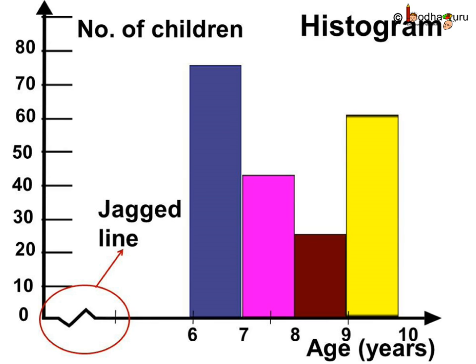In this particular case the data is not starting from 0. We have the age group starting from 6, not from 0. Hence a jagged line has been used along the horizontal line to indicate that we are not showing the numbers corresponding to ages between 0 to 6.